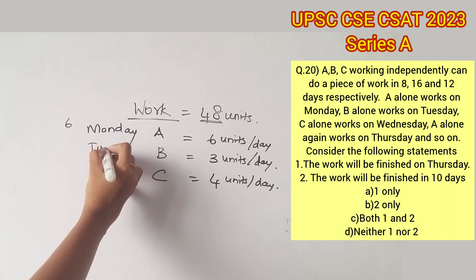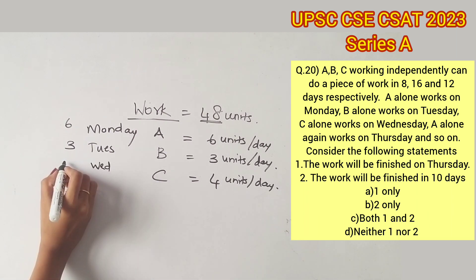On Tuesday, B will work alone and complete the next 3 units. On Wednesday, C would work alone and complete the next 4 units. So for now, a total of 13 units has already been completed out of the 48 units.